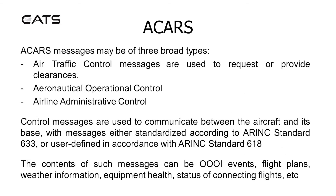ACARS messages may be of three broad types: air traffic control messages used to request or provide clearances; aeronautical operational control; and airline administrative control. Control messages are used to communicate between the aircraft and its base, with messages either standardised according to ARINC Standard 633 or defined in accordance with ARINC Standard 618. The contents of such messages can include OOOI events, flight plans, weather information, equipment health, status of connecting flights, and more.